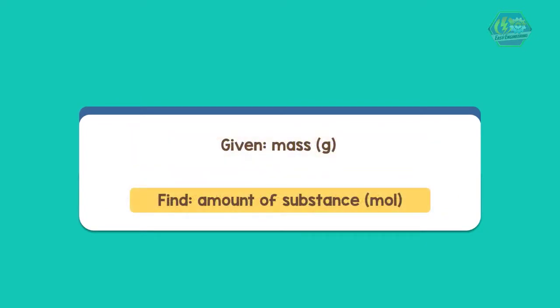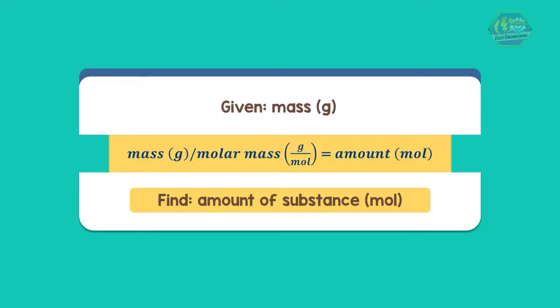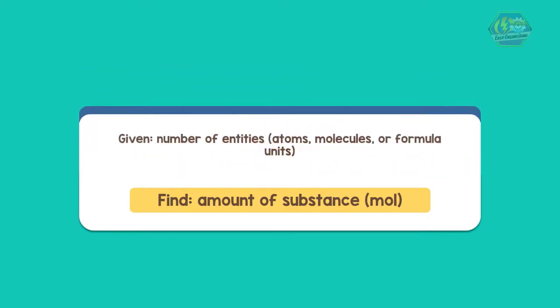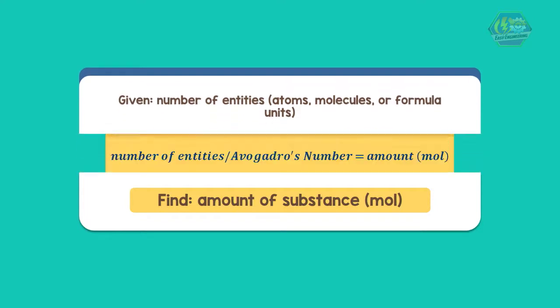If we are given mass, just divide it by the molar mass to get the amount. So as the number of entities, divide by Avogadro's number to get the amount.